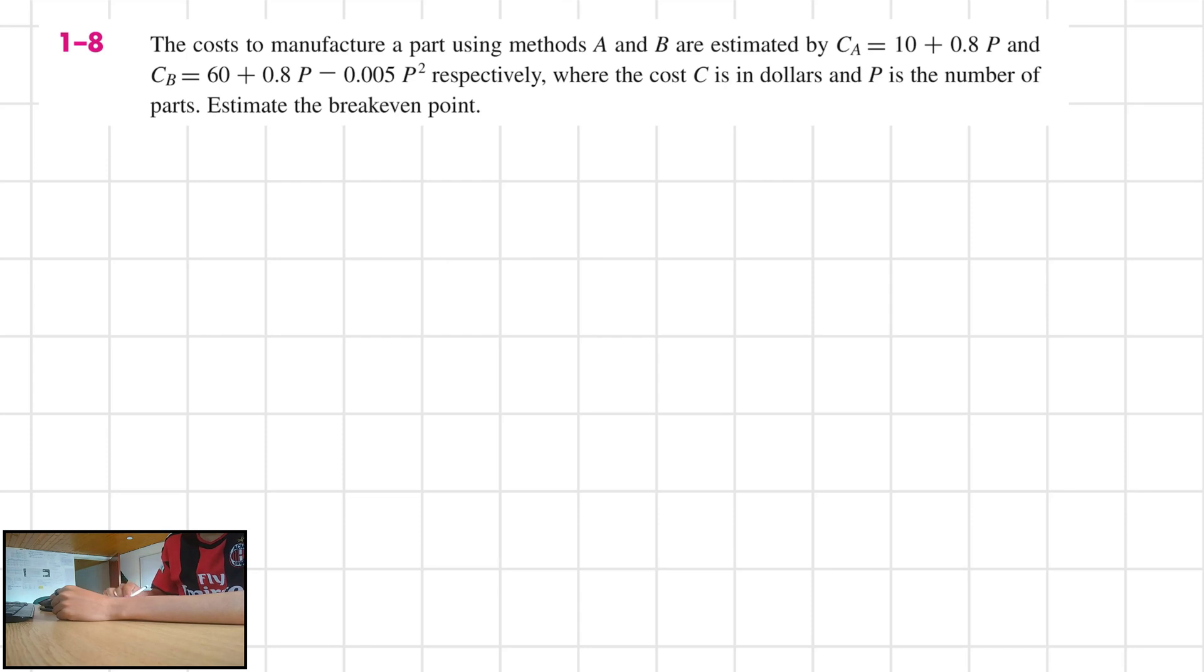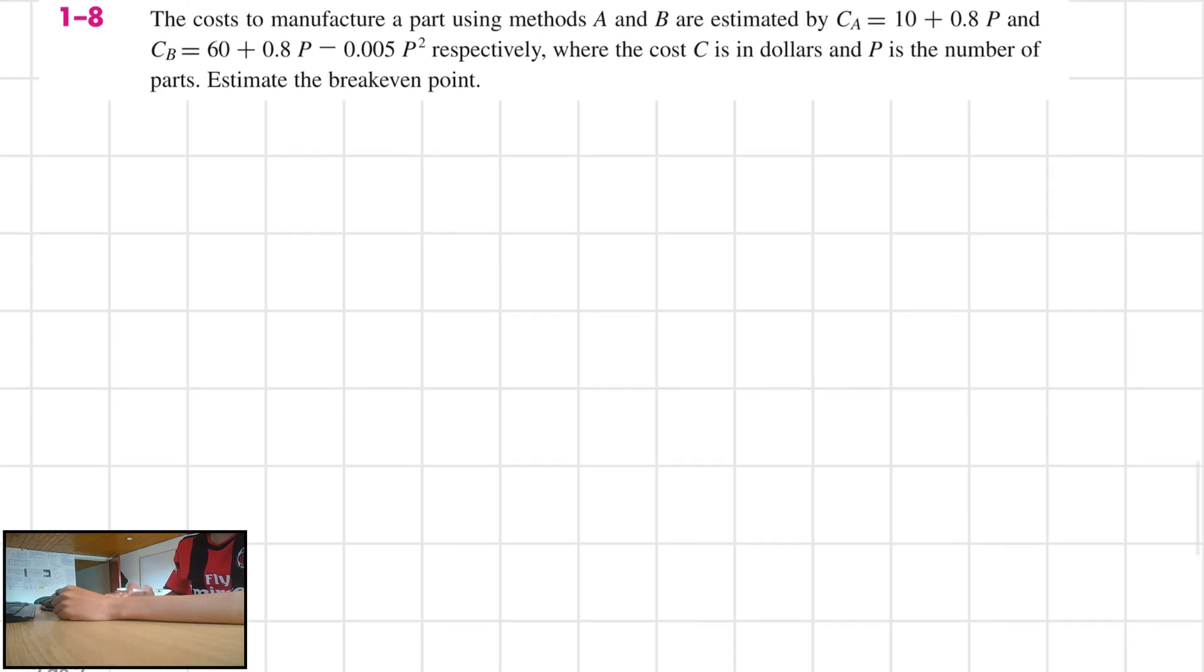Alright, so this is pretty easy, actually. All we have to do is to create an equivalence between these two and find P. The break-even point is going to be the number of parts in which both of the cases, both of the methodologies, cost the same. That is what we are looking for.